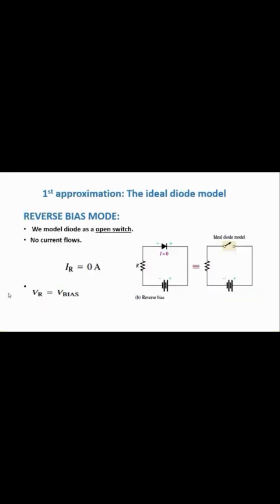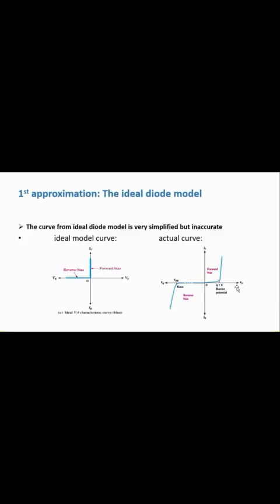In reverse bias mode under the ideal diode model, we model the diode as an open switch. An open switch means the circuit is incomplete, so the current throughout the circuit is zero — I_r equals zero. The voltage appearing across the open terminals equals the battery voltage V_bias, so V_r equals V_bias.